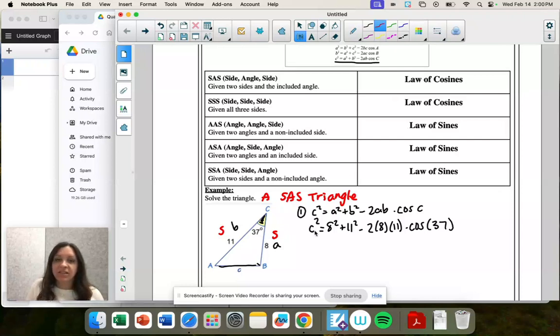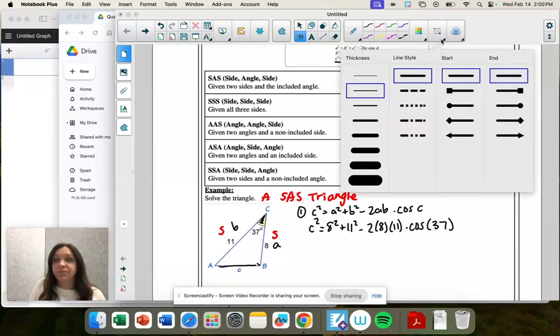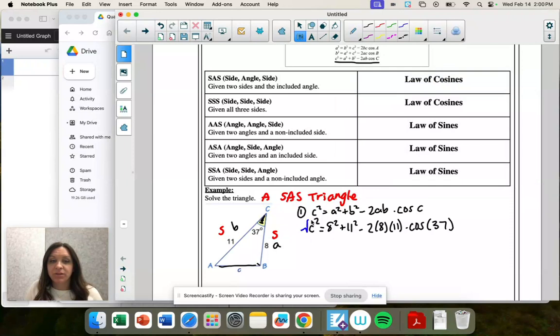So notice that that's C squared. So when I put that in the calculator, it's going to give me a decimal. What's the opposite of a square? It's a square root, right? I just want C. So I'm actually going to put it in the calculator with the square root.